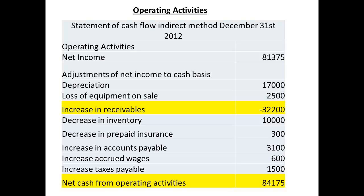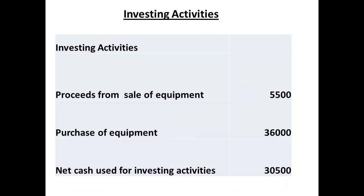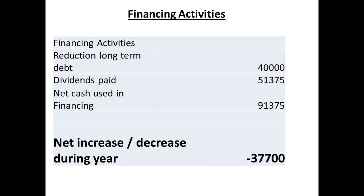Finally, a look at the cash flow statement. The net cash from operating activities is $84,175. Note that this section also shows the large increase in receivables. The increase in assets of plant and equipment is shown in the net cash being used for investing activities. The reduction in long-term debt is reflected in financing activities, but note also that a dividend has been paid — investors will see this as encouraging. Over the year, there has been a net decrease in cash. The increase in net income has been used to pay off debt and to pay a dividend, and surplus cash has been reduced.